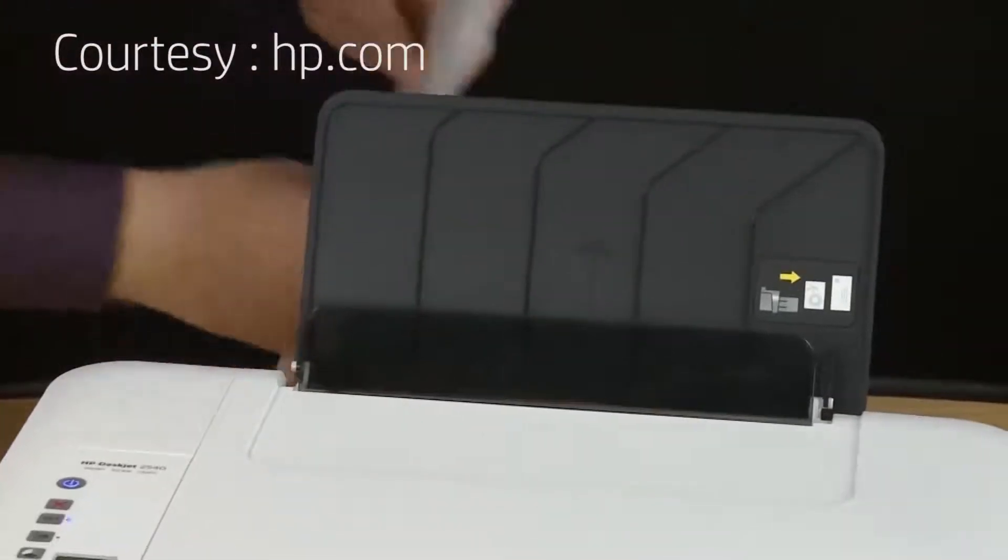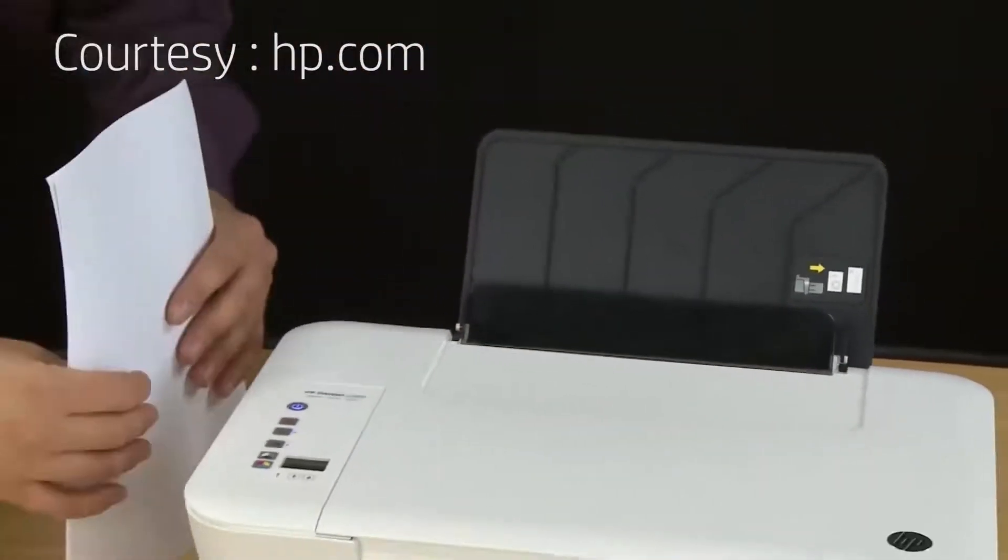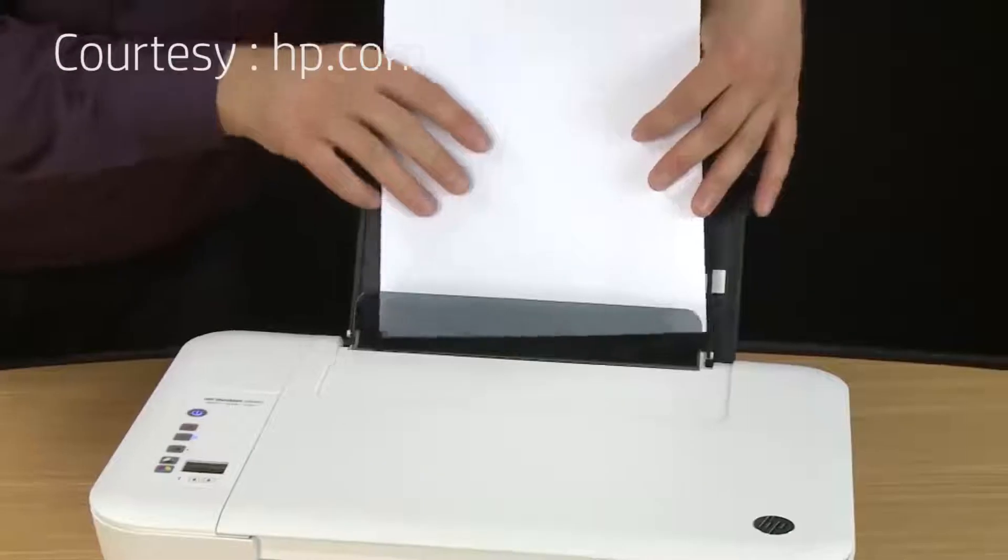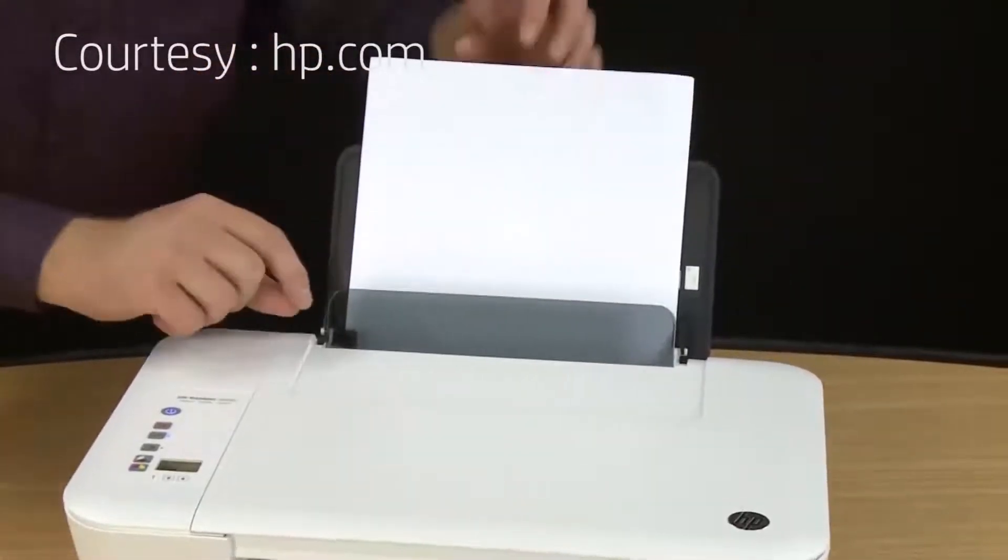Once the guide is adjusted, tap a stack of paper on a hard surface and then slide it into the input tray. Slide the adjustment guide until it's snug against the stack.